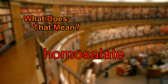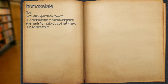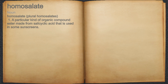What does homosalate mean? Homosalate. Noun. A particular kind of organic compound ester made from salicylic acid that is used in some sunscreens.